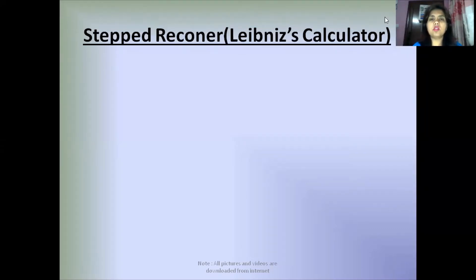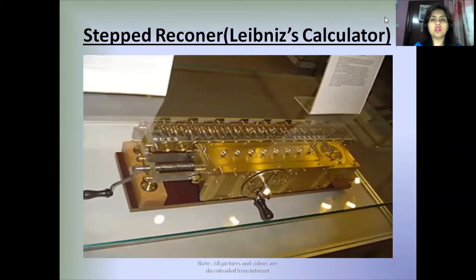Our next device in stage 2 is Step Reckoner, which is also known as Leibniz's Calculator. Here is the picture of Leibniz's Calculator. It is also known as the revised version of Pascaline.